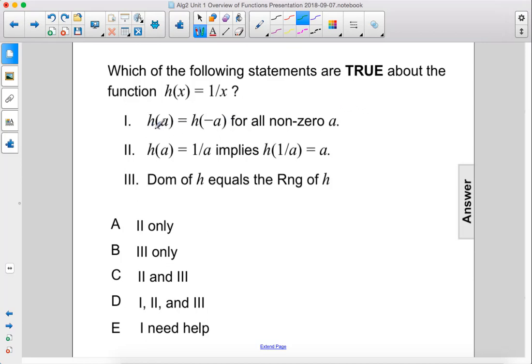Let's say a is 2. So h of 2 equals 1 over 2, which is 1 half. And h of negative 2 equals negative 1 half. These two values are not equal, therefore statement one is not true.